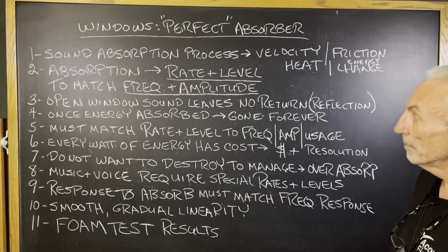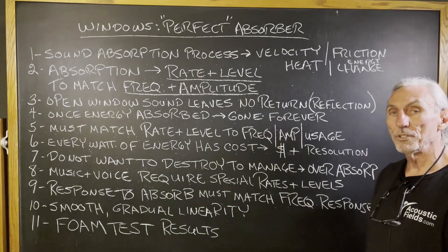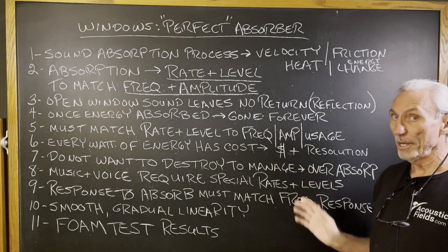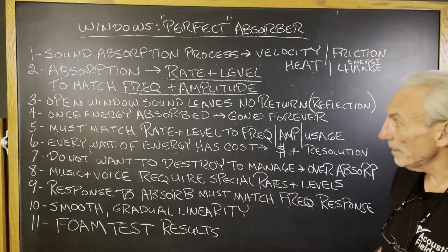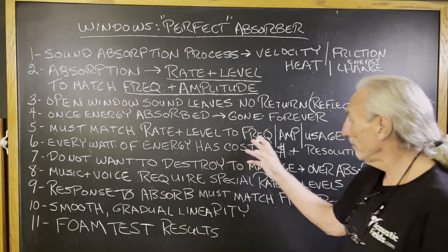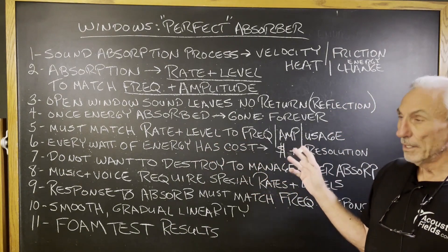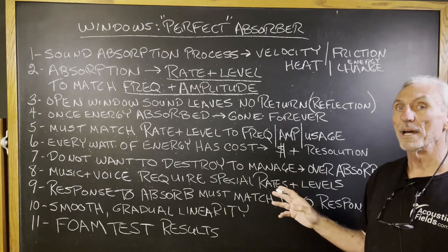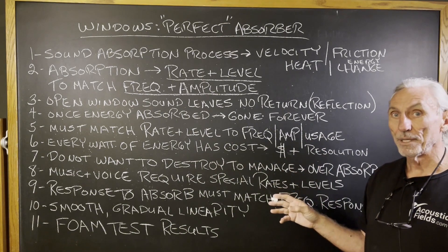So a closed window is not a perfect absorber. We've got to realize that once energy is absorbed, it's lost forever — it's gone, changed into a new form. We've got to match our rate and level to the frequency and amplitude of the usage of the room. There's no one size fits all, and you can't use one technology to absorb low frequency energy and another for mid and highs — they're separate.